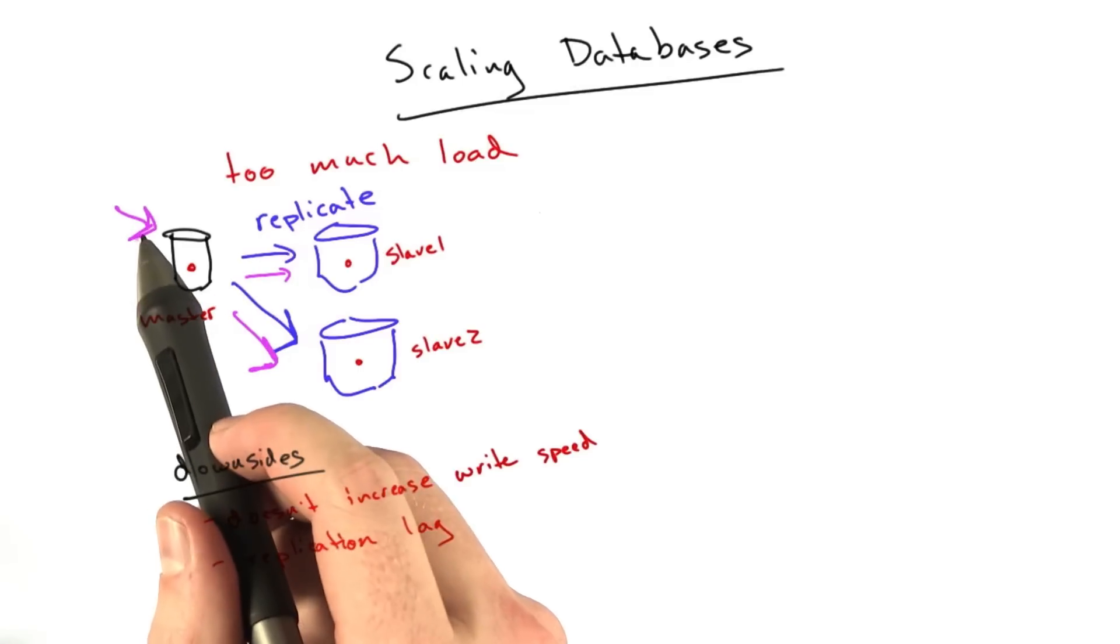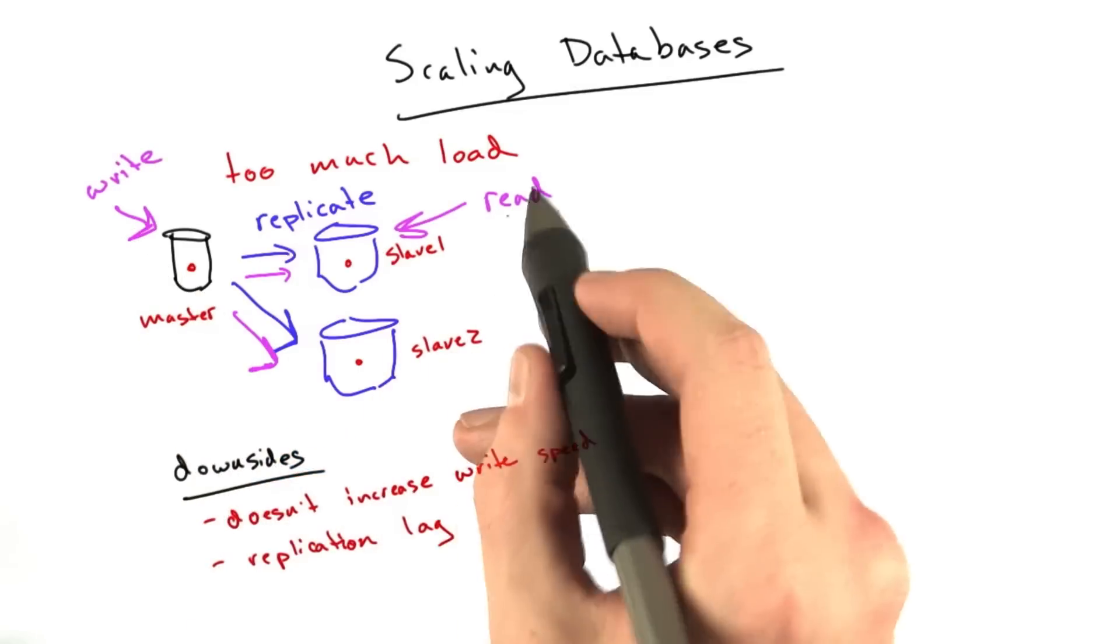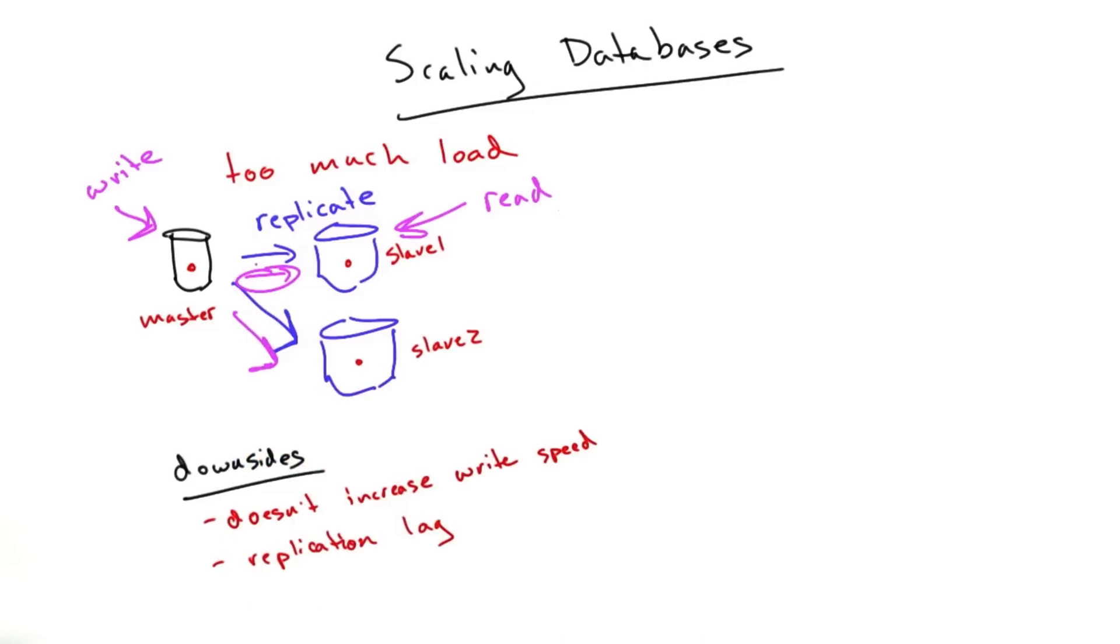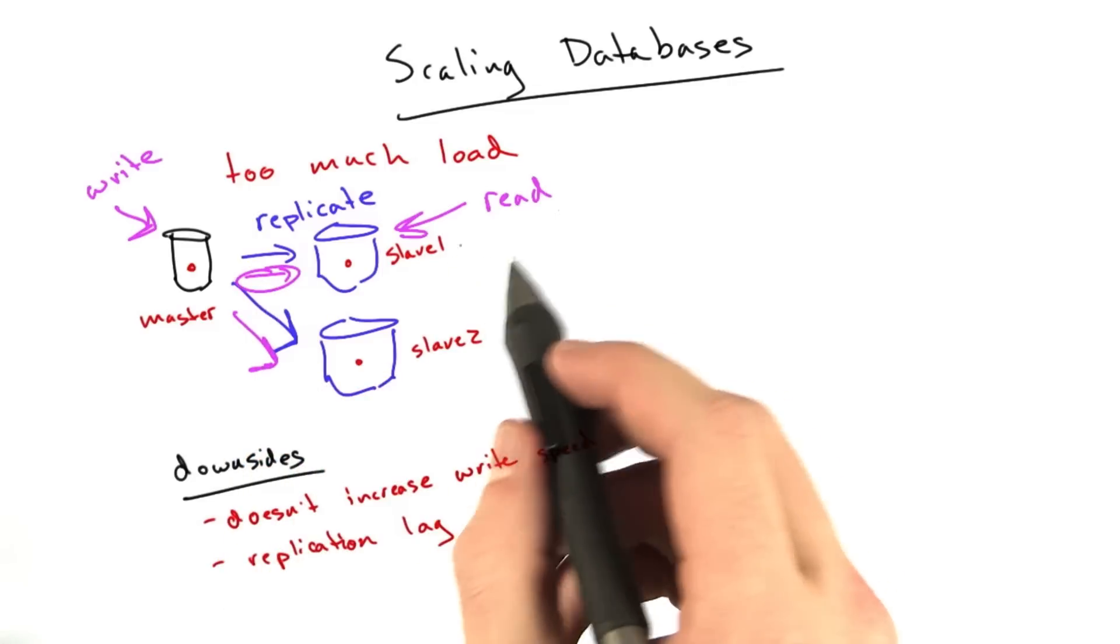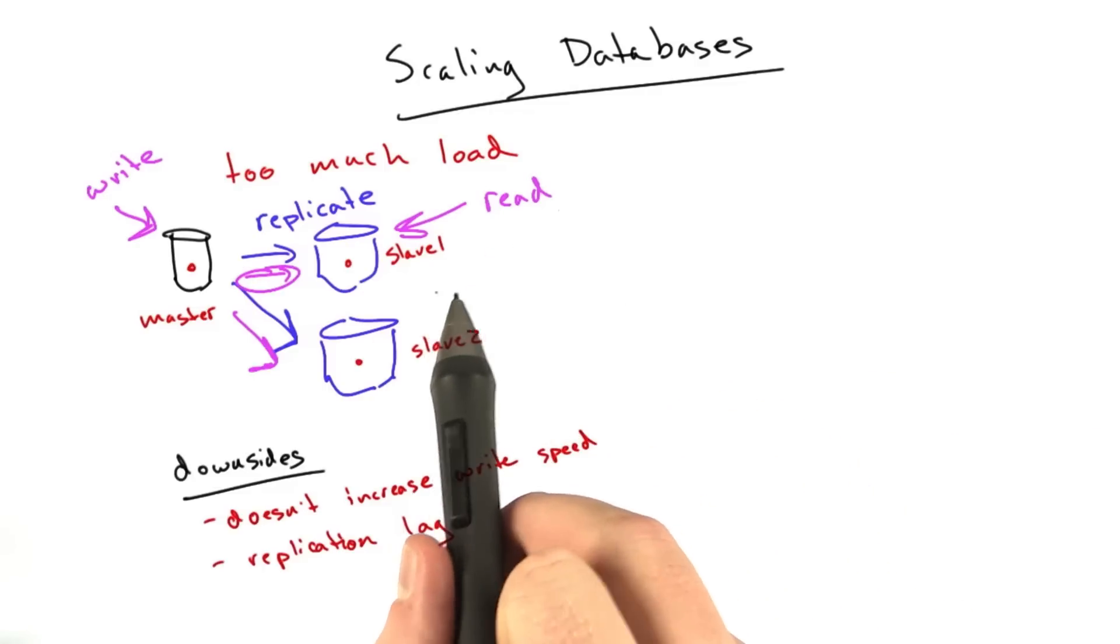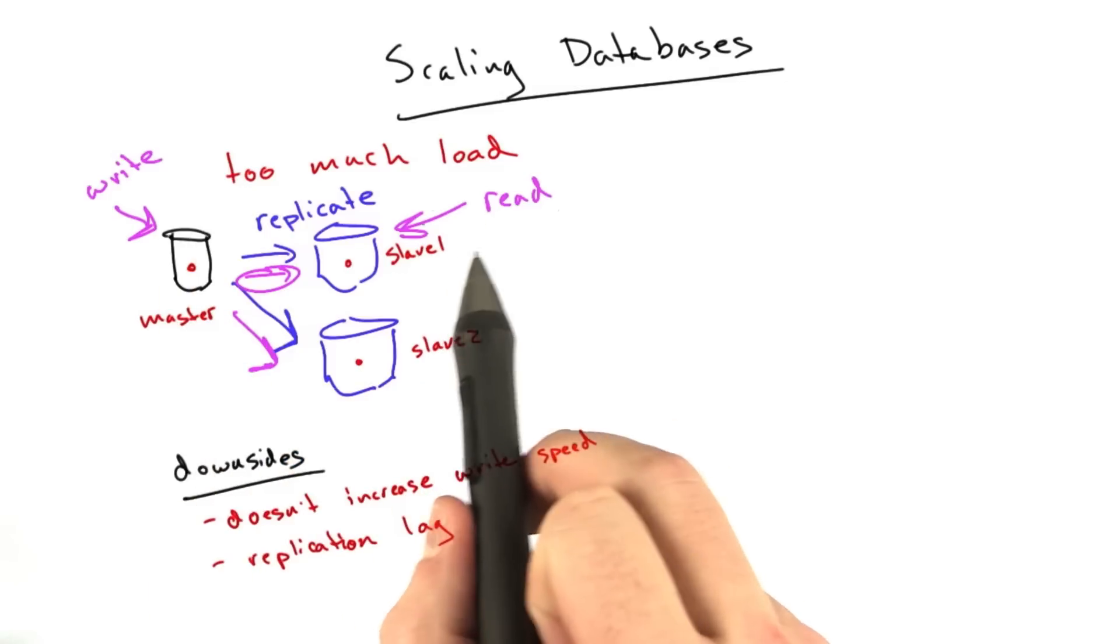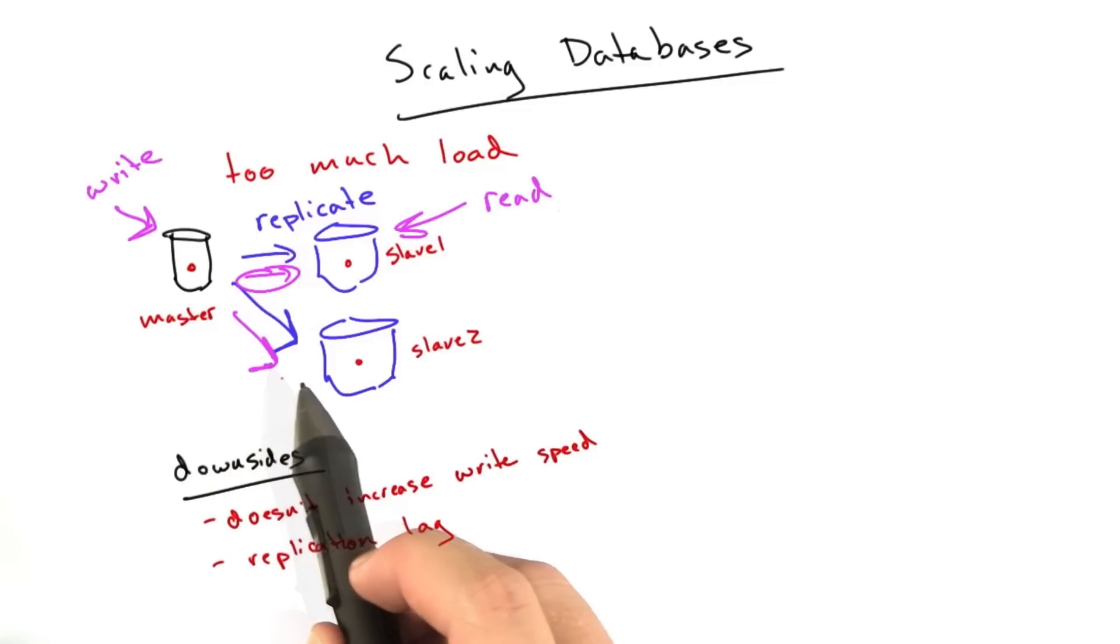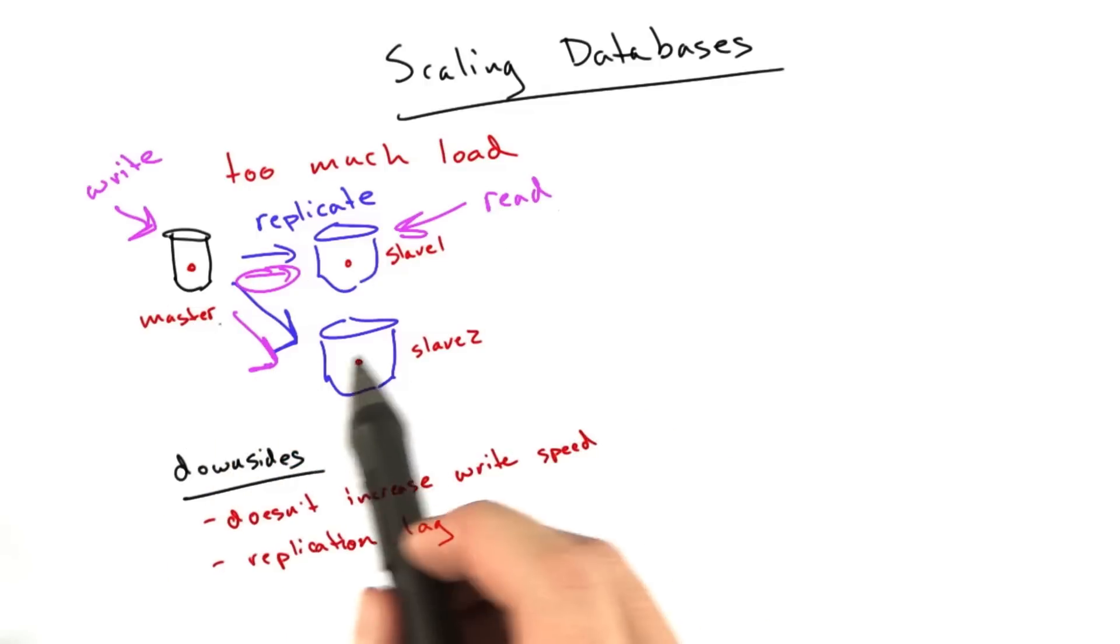There are some downsides to this. One is that it doesn't increase the speed of writes. We're still bottlenecked by this one master receiving all of this data, who has to in turn send it to all of these slaves. Another downside is this notion of replication lag.